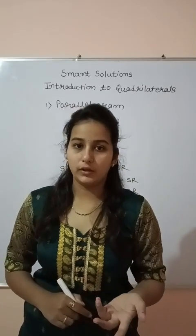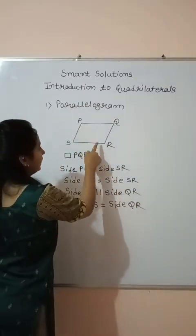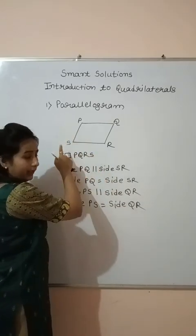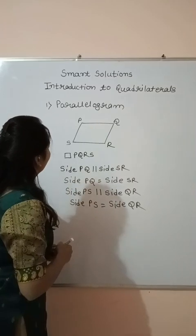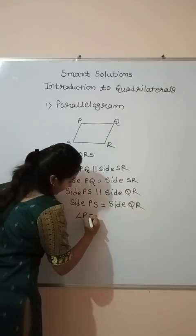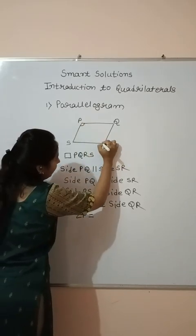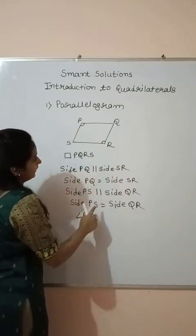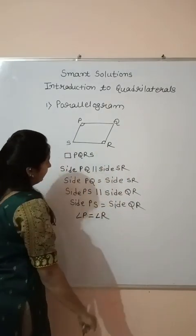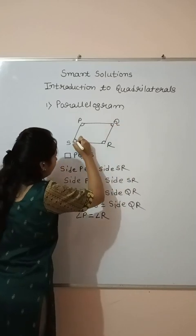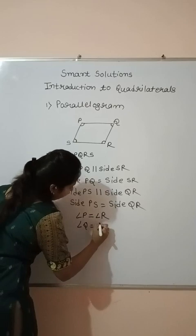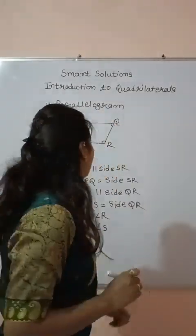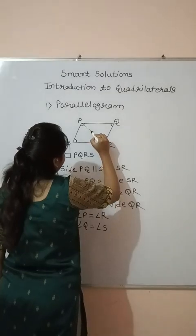So the opposite sides of the parallelogram are parallel and equal to each other. The next property of the parallelogram is about the angles: the opposite angles of the parallelogram are equal. What are the angles of the parallelogram? Angle P, angle S, angle R, and angle Q. So angle P is equal to angle R — P and R are opposite angles. And angle Q is equal to angle S. So this is the second property. The third property of the parallelogram is about the diagonals.